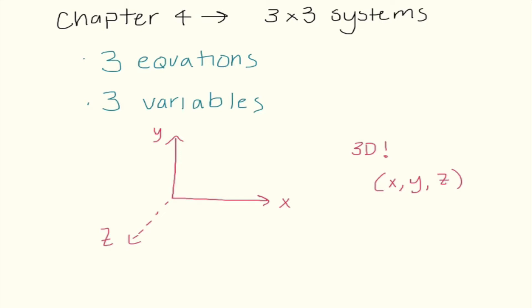So what that means for our solutions — our solutions this time, instead of being an ordered pair, are going to be an ordered triple. So we have x, y, and then we have this third variable, z. And what this actually means is that we are in 3D. I drew a picture where we have our x-axis, our y-axis, and then we have our z-axis.